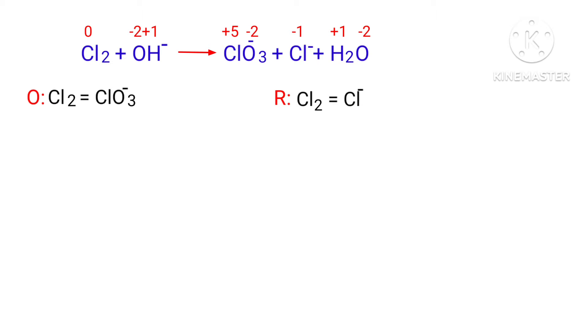In the ion electron method, one reaction is divided into two half-reactions, and then they are balanced and added together. Now you can balance the number of atoms in the two half reactions.